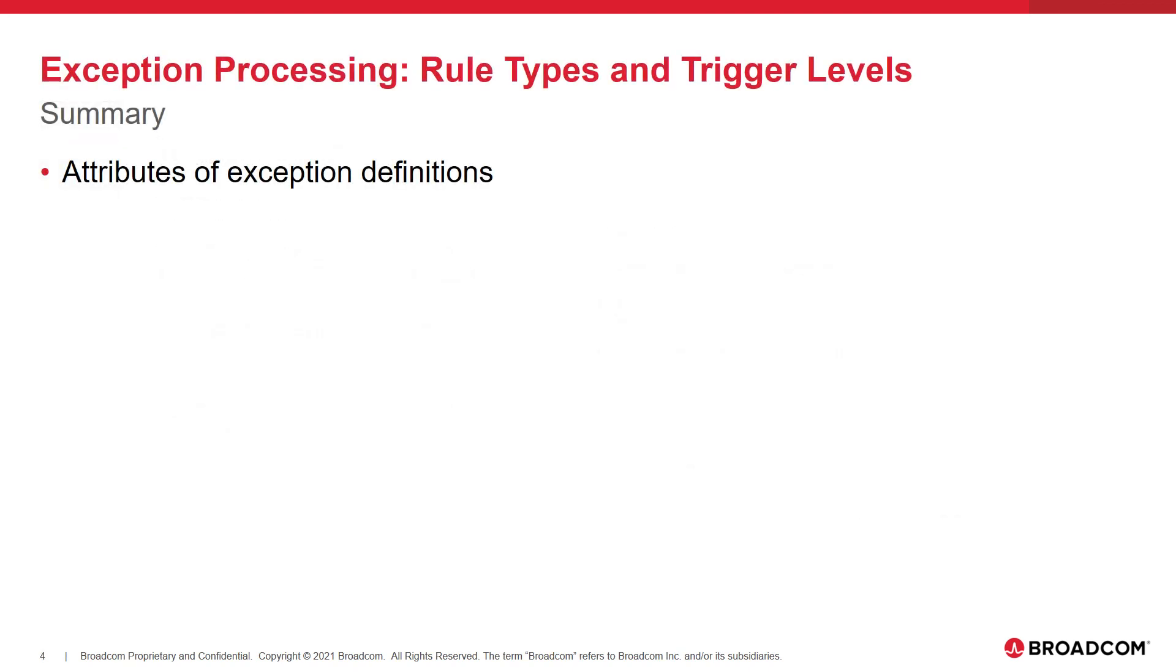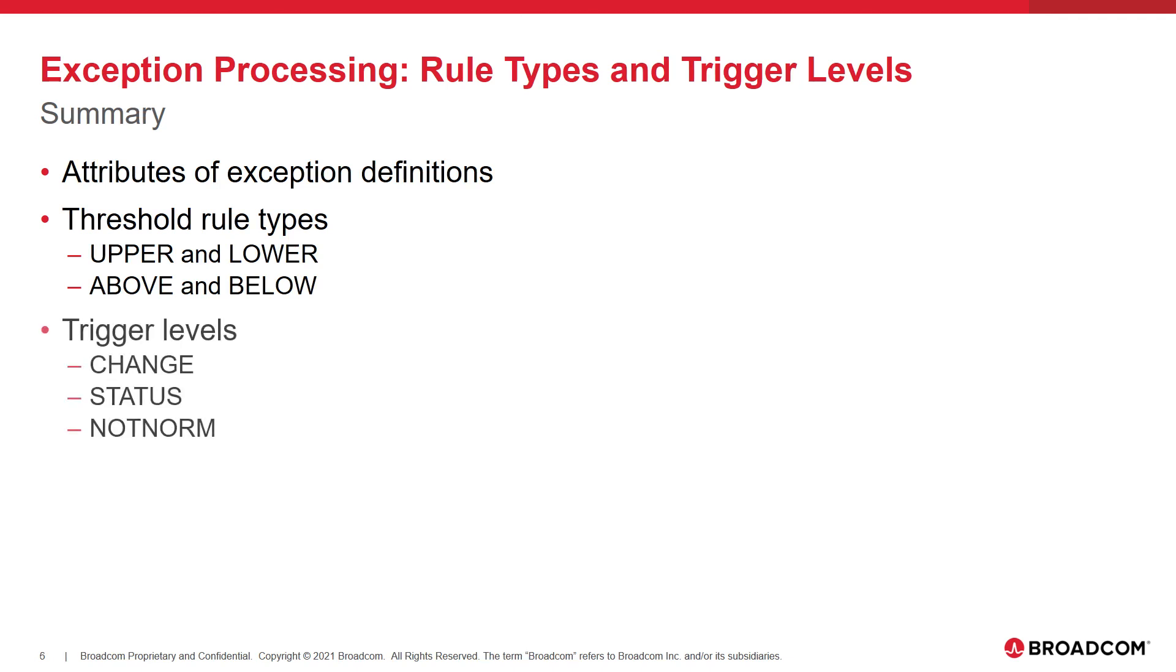That concludes our discussion on CAA SysView exception processing rule types and trigger levels. In summary, we have covered the attributes that exception definitions can have. We discussed the difference between the threshold rule types upper and lower and above and below. Finally, we discussed the trigger levels change, status, and not norm. You should now be comfortable when it comes to assigning rule types and trigger levels to CAA SysView exception definitions.